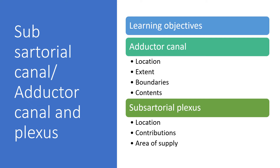The learning objectives for these topics: for the adductor canal or subsartorial canal, you should know where it is located and from where to where it extends, what are its boundaries, what are the contents, and this should be followed by its clinical importance. Coming to the subsartorial plexus, you should have an idea where it is located, what are the contributions for this plexus, and it is a narrow plexus, and what is the area that is supplied by this plexus.